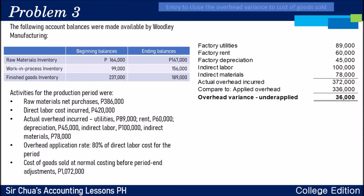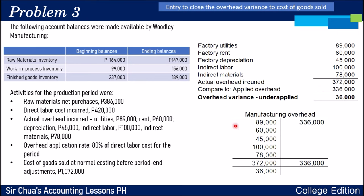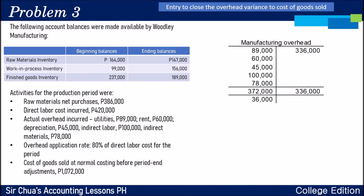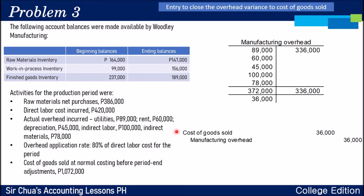Question number three: what is the entry to close the overhead variance to cost of goods sold? Any overhead variance, when immaterial, must be closed to cost of goods sold. The manufacturing overhead T-account has a debit balance of $36,000 — that's the under-applied variance. To zero out manufacturing overhead, we place $36,000 on the credit side. The closing entry is: debit cost of goods sold $36,000, credit manufacturing overhead $36,000.